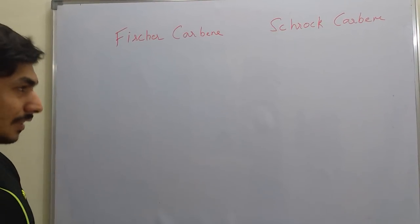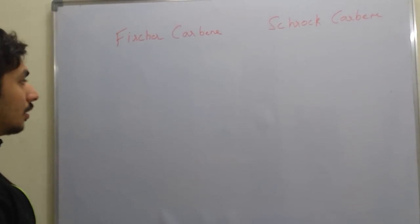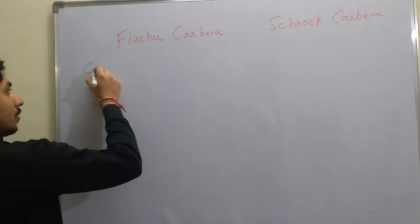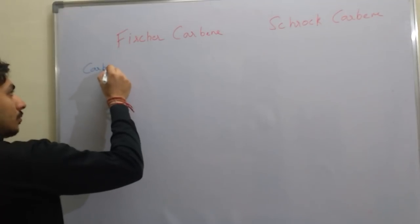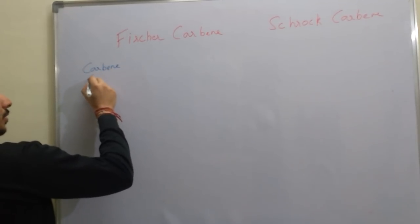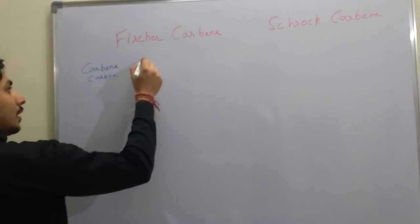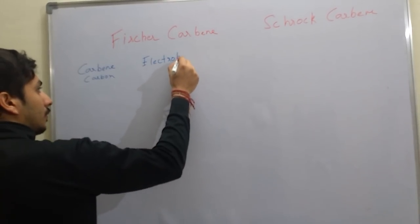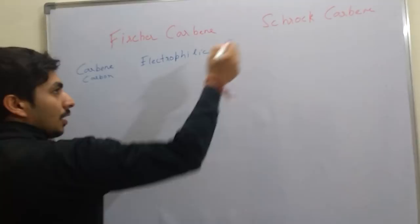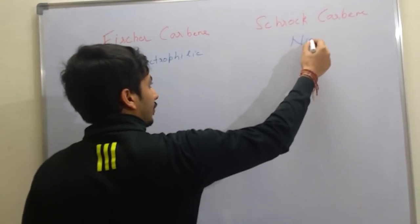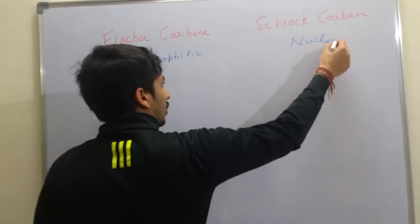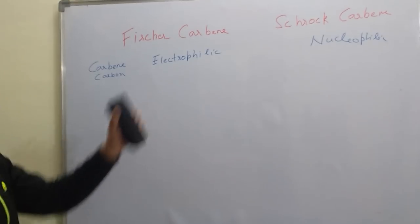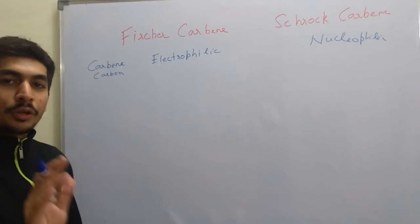In Fischer Carbenes, like the name suggests, it was first developed by Fischer, and the nature of the carbene carbon is electrophilic. Whereas in Schrock Carbenes, it is nucleophilic. So this is the first point of difference: the carbon of a Schrock Carbene is nucleophilic, and that of a Fischer Carbene is electrophilic.